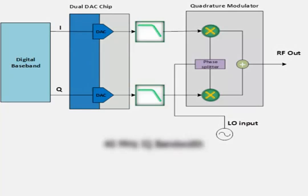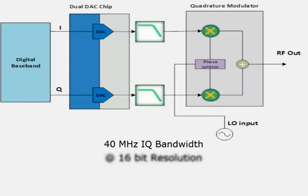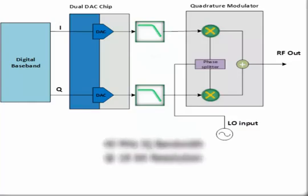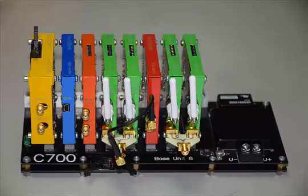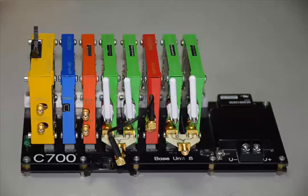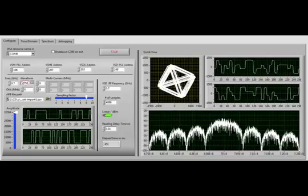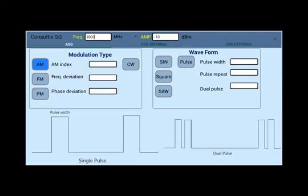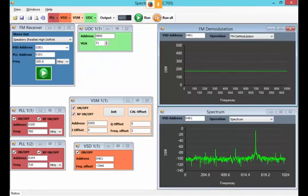Both the VSM and VSD modules have an IQ bandwidth of 40 MHz at full 16-bit resolution for best SFDR performance. Several modules can be aggregated for massive and more complex designs. Moreover, phase-coherent operation allows for the use of modules in multi-channel and MIMO applications. On top of all this, the VSM and VSD modules can operate as a fully functional vector signal generator and vector signal analyzer, for maximum benefit to your lab.